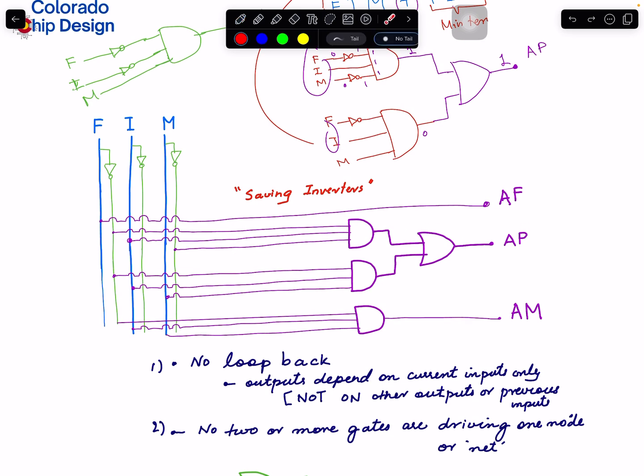So first thing, no loopback. Outputs depend on current inputs only. It doesn't depend on, for example, this gate output doesn't depend on this output.